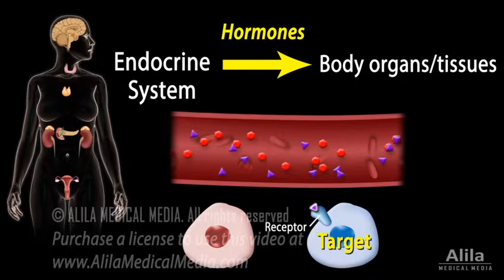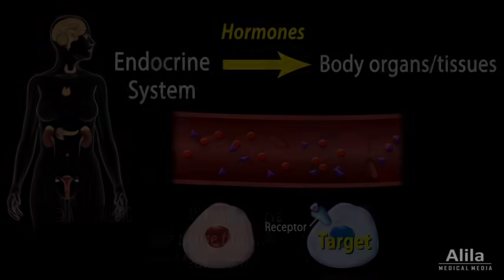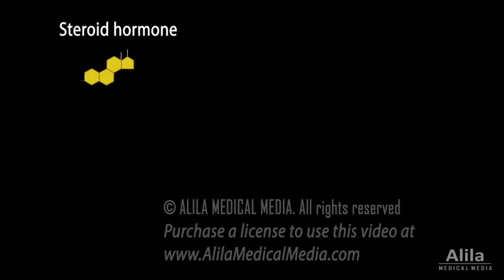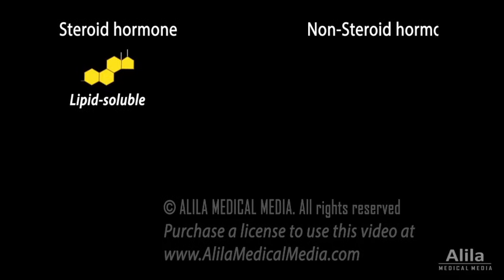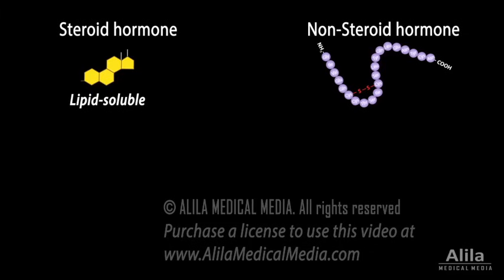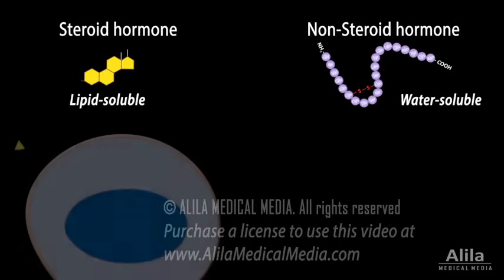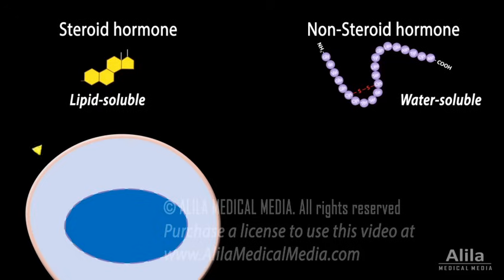There are two major types of hormones. Steroid hormones are derived from cholesterol and are lipid-soluble, and non-steroid hormones are derived from peptides or amino acids and are water-soluble. Lipid-soluble steroid hormones can cross the cell membrane to bind to their receptors inside the cells, either in the cytoplasm or nucleus.